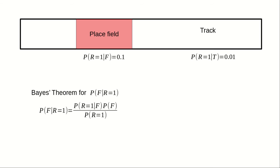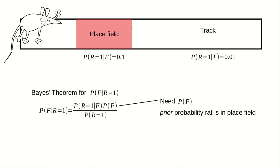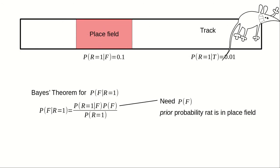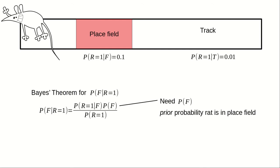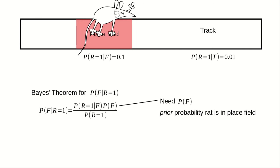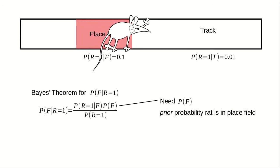We are given P of R equals 1 given F, but Bayes' theorem also depends on P of F, or the probability that the rat is in the place field without regard to the neuron's activity. We call this the prior probability of being in the place field. Without this prior probability, we have no way of estimating the probability of being in the place field conditioned on observing the spike. For example, if the rat rarely dared venture away from the ends of the track and so rarely crossed through the place field, we'd get one answer. But if for some reason the rat enjoyed spending lots of time in the place field, we'd get a very different answer. Using Bayes' theorem is critically dependent on the prior probability P of F.